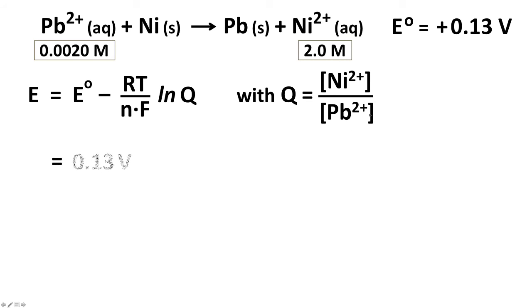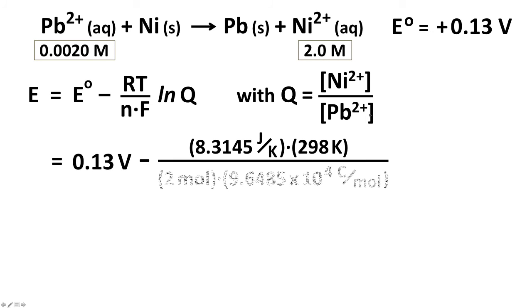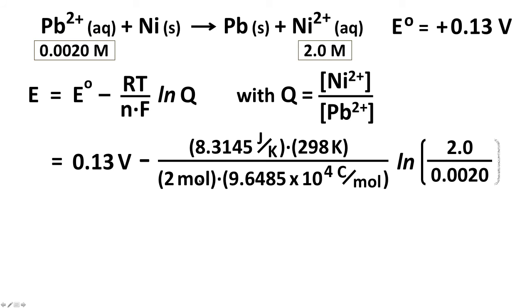So if we start plugging in numbers, E° = 0.13 volts. R is 8.3145 J/K. Temperature is 298 K. Two moles of electrons were transferred. Faraday constant is 9.6485 times 10⁴ Coulombs per mole. And then we have ln of the reaction quotient, which is 2.0 over 0.0020.